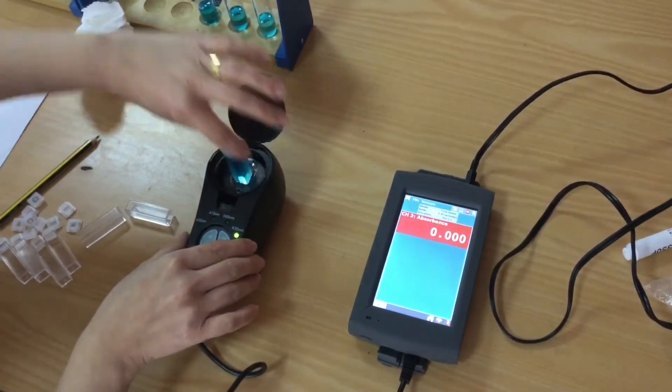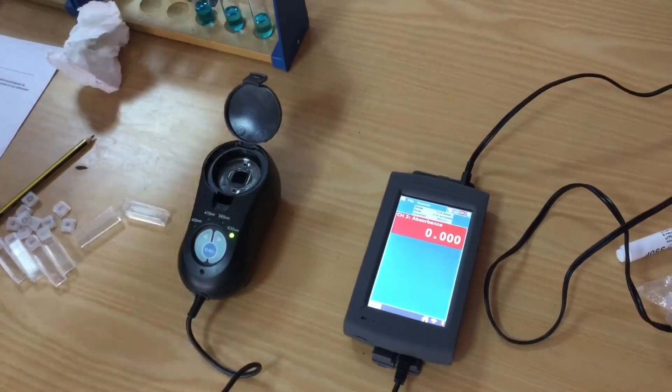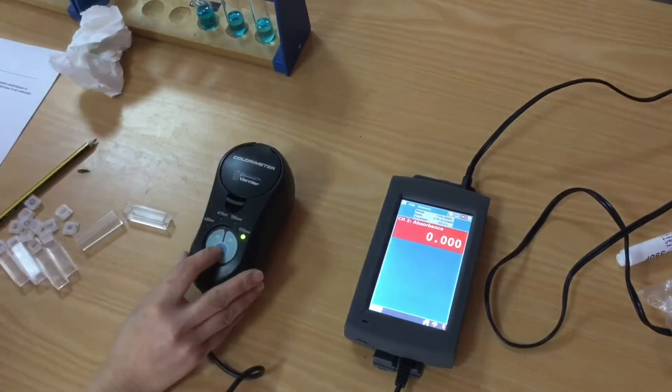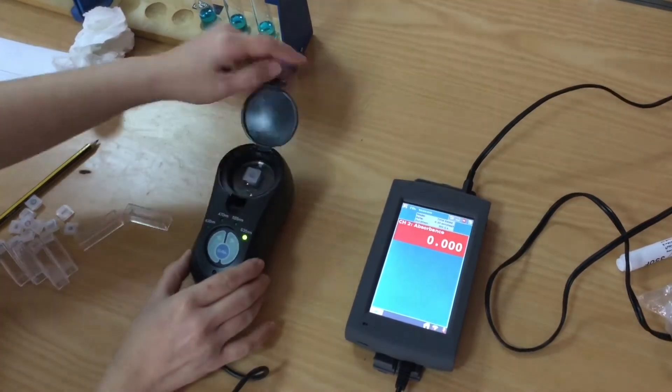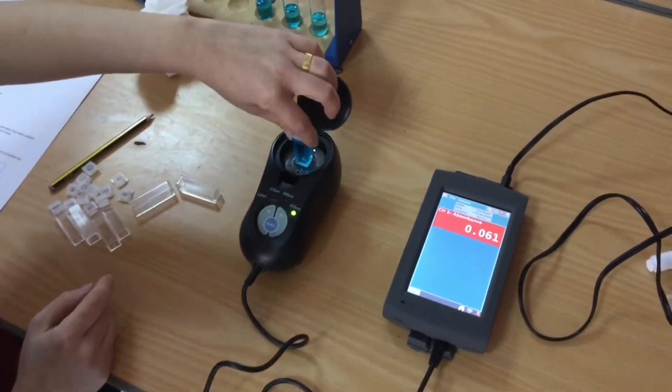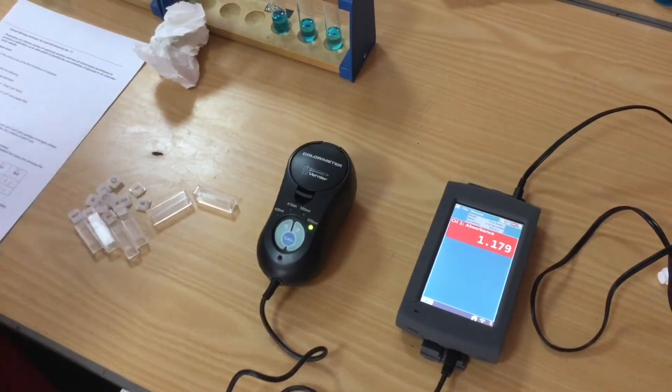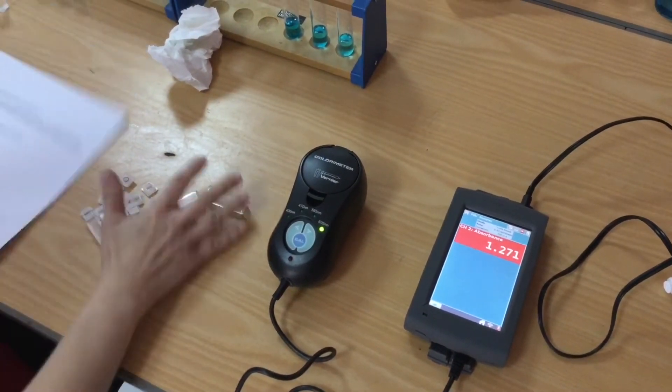With a line of best fit we're trying to go through as many of the crosses as possible. Or what we can do is try to aim to have as many of the crosses on one side of the line on the opposite side of the other so that our line of best fit runs through the center.